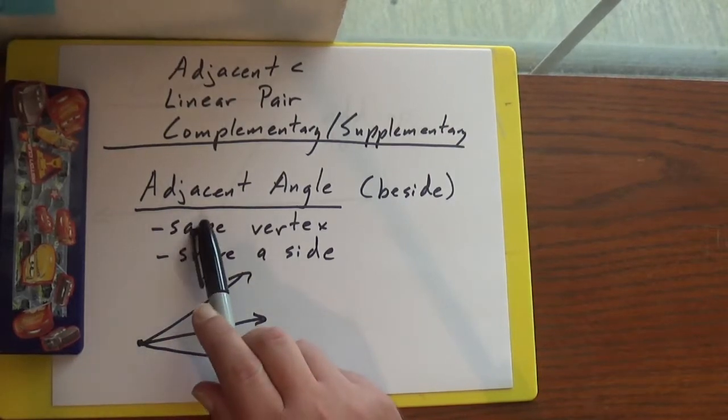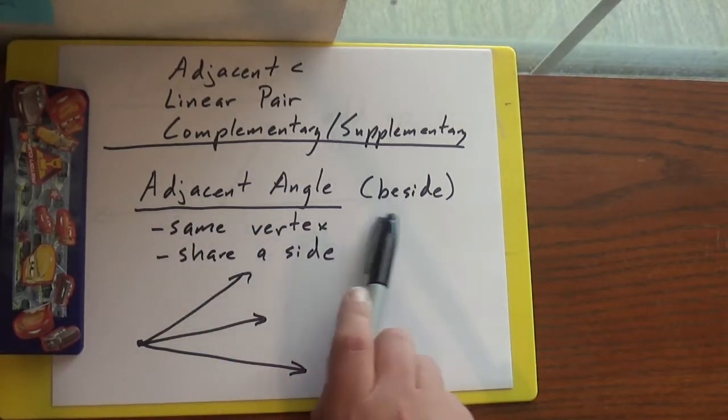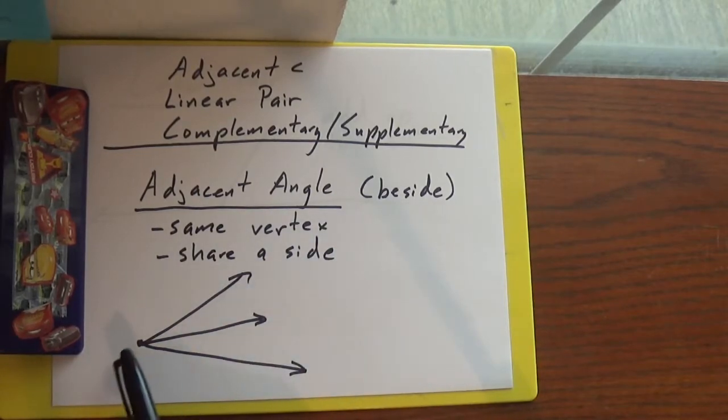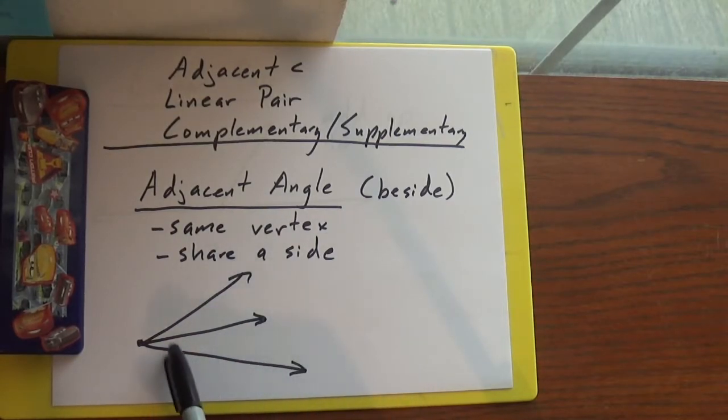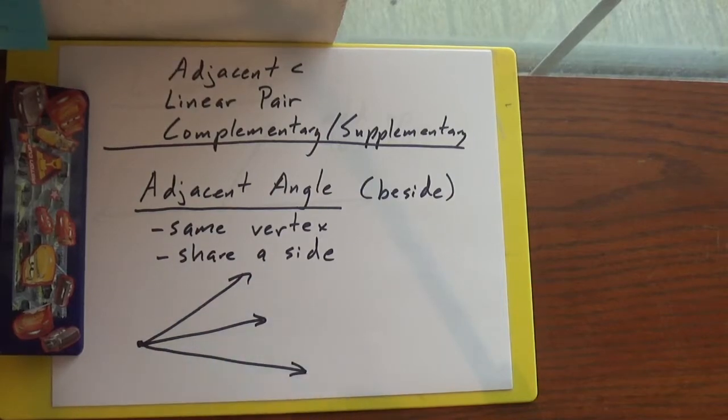So first, adjacent angles. Adjacent just means it's beside. They're next to each other. So they're going to have the same vertex and they're going to share a side. So there's this angle, there's this angle, they're next to each other. They share a vertex, they share a side.